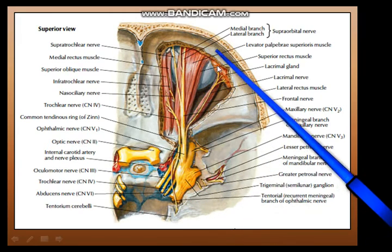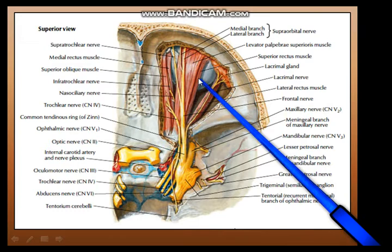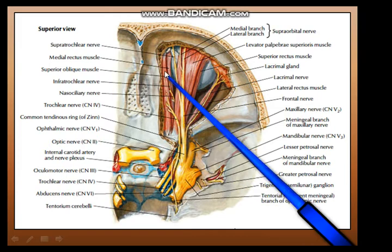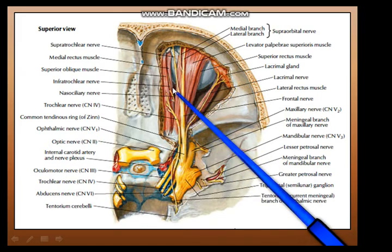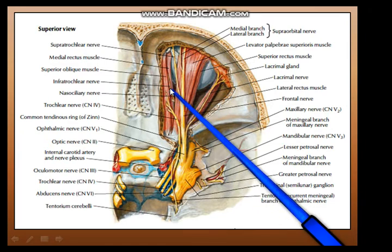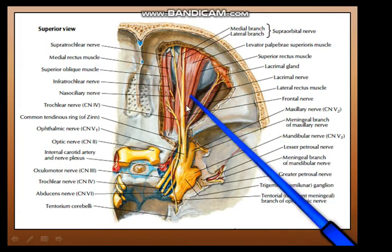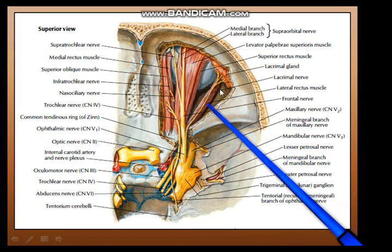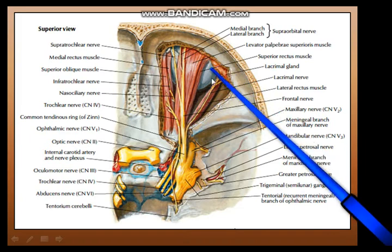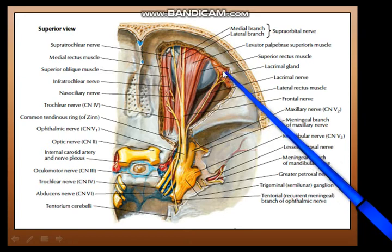At this point, having removed the roof of the orbit, you can see the levator palpebrae superioris; underneath it the superior rectus muscle; laterally the lateral rectus; medially the superior oblique; and if you separate it slightly with a hook, underneath that the medial rectus. You can also see the lacrimal gland in the corner just underneath the orbital margin and the orbital plate of the frontal bone.